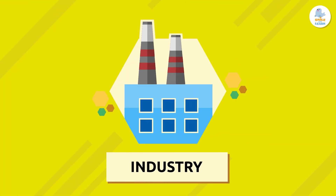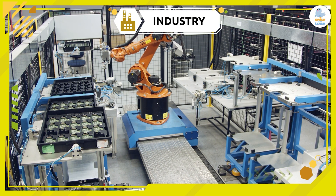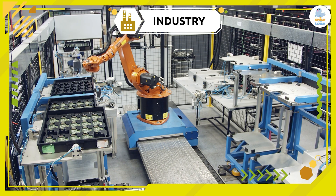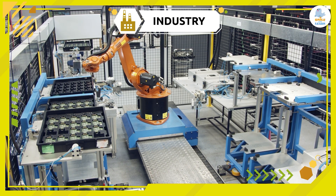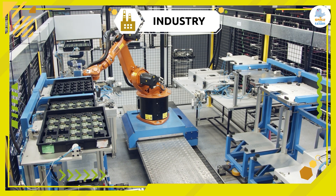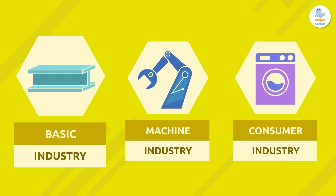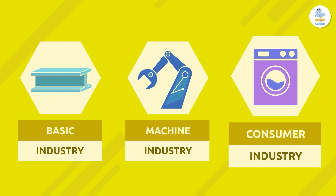Industry. The purpose of industry is to transform raw materials into manufactured products using machines and energy sources. There are three types of industry: basic industry, machine industry, and consumer industry.